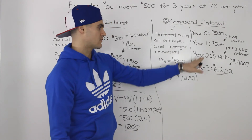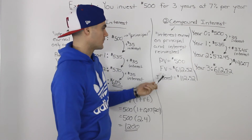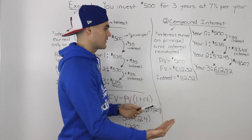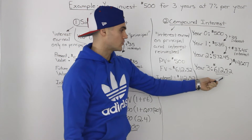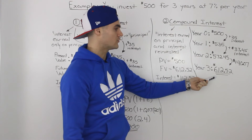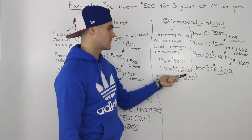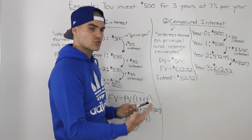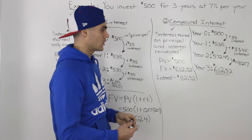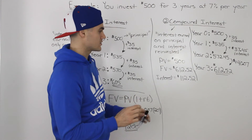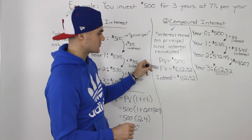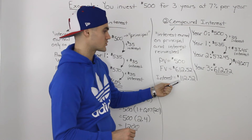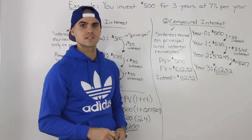Summarizing the compound interest scenario: present value was $500, future value was $612.52 at the end of three years, so the interest earned over that period was $112.52 — the difference between the future value and the present value.